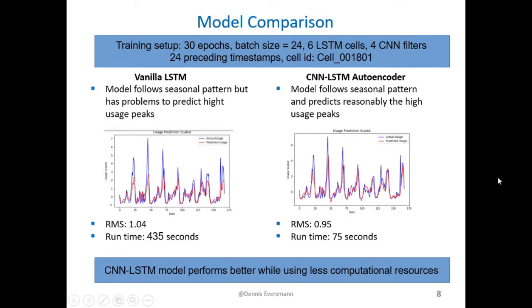In order to compare the performance of both models, the training setup was the same for both architectures. We took 30 epochs, a batch size of 24. We've chosen 6 LSTM cells, 4 CNN filters for the CNN autoencoder model and 24 preceding timestamps. The training process was performed on the cell ID 001801.